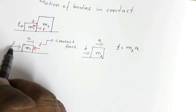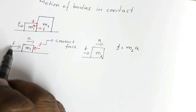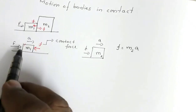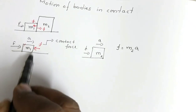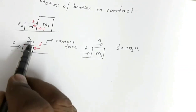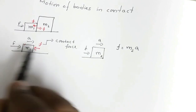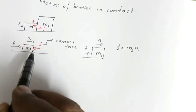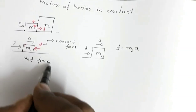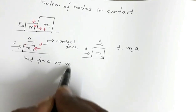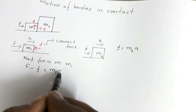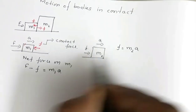For this block of mass m1: the external force F is acting towards the right, and the contact force f is acting towards the left. But the net force on this block is in the right-hand direction because the block is getting displaced in that direction with acceleration a, meaning F has greater magnitude than f. So the net force on m1 is: F minus f equals m1 into a.